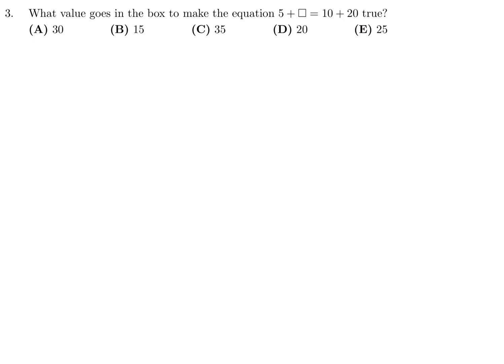What value goes in the box to make the equation 5 plus box equals 10 plus 20 true? We have 5 plus something is equal to 10 plus 20. 10 plus 20 is 30, that is equal to 5 plus something, and then if you put that something on the other side, it becomes 25. So the box is equal to 25, therefore number 3, the answer is E.